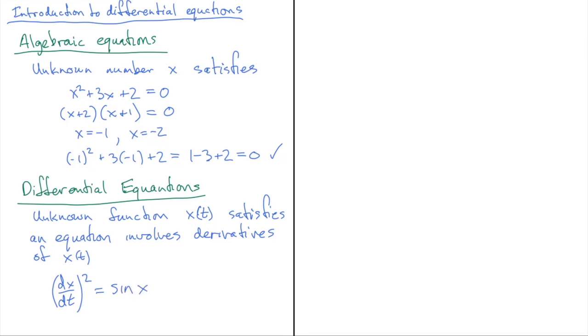And here, x, I'm suppressing the dependence on t. So often I'll do this. Instead of writing out x of t, I'll just write x instead.